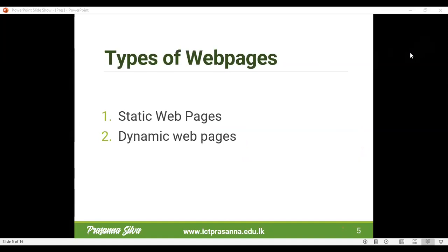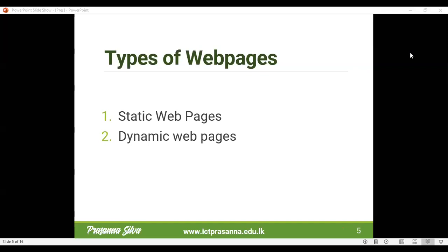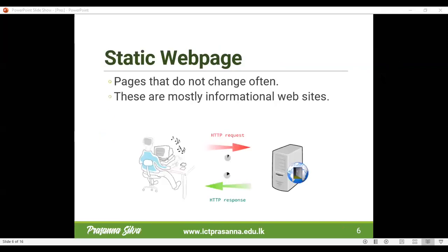There are two types of web pages. One is called static web pages, meaning they do not change very often — these are mainly informational websites. Through your browser, you're simply making an HTTP request, and there is content that is passive and static in nature. That information will be sent to you in the form of an HTTP response — simply HTML tags. The web browser will interpret the HTML tags and coding received from the web server and render it into graphics, elements, and text.